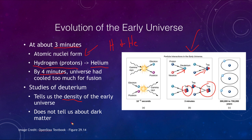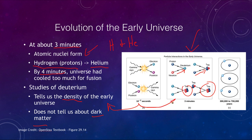By studying deuterium we can look at the density of the early universe and learn about the density of ordinary matter — though it does not tell us about dark matter. We formed particles first, then after that electrons and positrons, then simple nuclei, and finally after a few hundred thousand years we were beginning to form actual atoms.